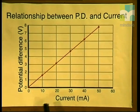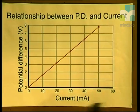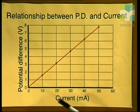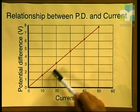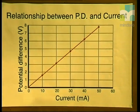Let's now use these results to plot a graph to establish the relationship between potential difference and current. Here is my graph showing that relationship. I've plotted the potential difference values on the y-axis and the current values on the x-axis, with a clear scale on each axis. The graph plotted is a nice straight line, which shows us that as the current increases, the potential difference is also increasing.